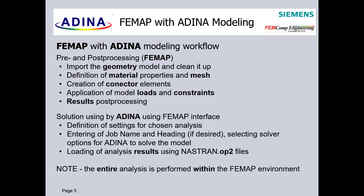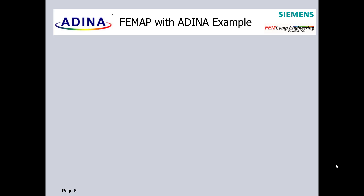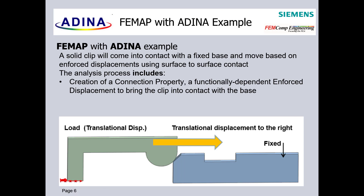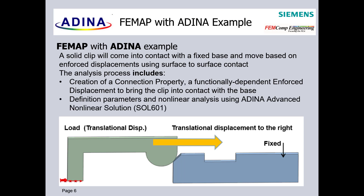Please note that the entire analysis is performed within the FIMAP environment. The example presented here involves a solid clip coming into contact with a fixed base, driven by enforced displacement using surface-to-surface contact. The analysis includes creation of connection properties and functionally dependent enforced displacement to bring the clip into contact with the base, plus definition of parameters and non-linear analysis setup in FIMAP using ADINA advanced non-linear solutions SOL 601.